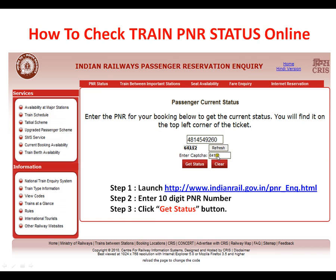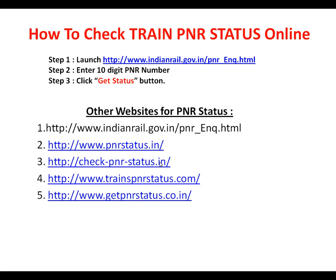You should also enter the security code as it is — this is just to check whether you are a human or a robot. Enter the security code, enter your 10-digit PNR number, and click 'Get Status'. The moment you click 'Get Status', the PNR status will be displayed.